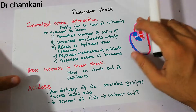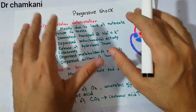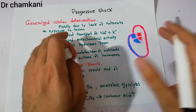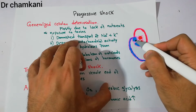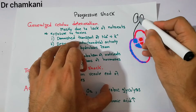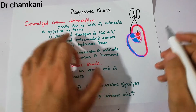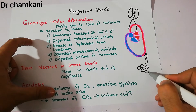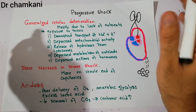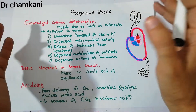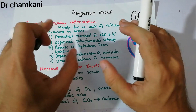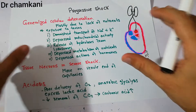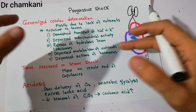Due to these factors, in severe conditions, generalized cellular deterioration occurs. Shock is a condition in which there is inadequate supply of blood, oxygen, and other nutrients to the body tissues. Shock has three stages: the initial non-progressive compensated shock, the second stage of progressive shock which keeps deteriorating, and finally the irreversible shock. We will now discuss what happens as a result of increasing severity of progressive shock.